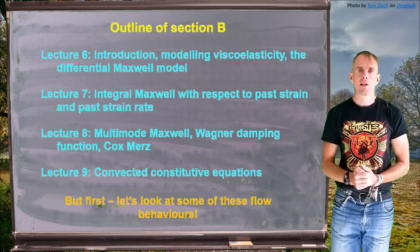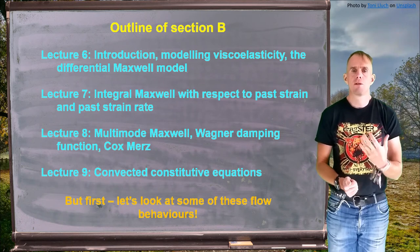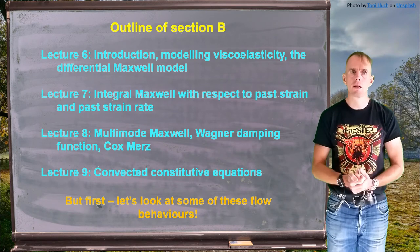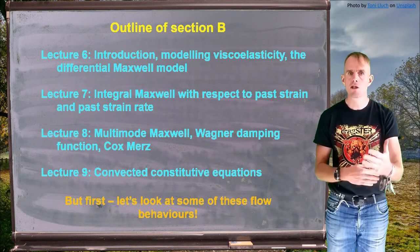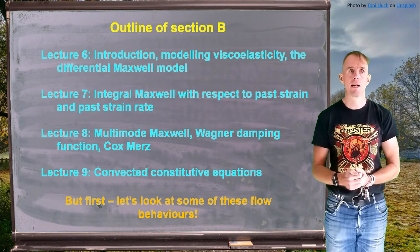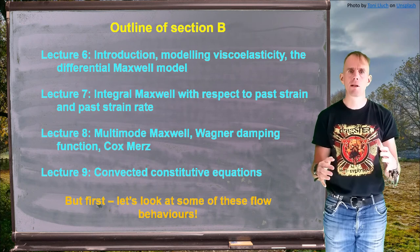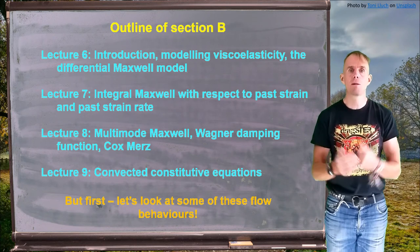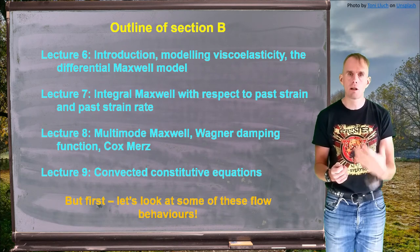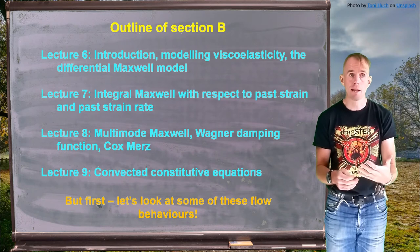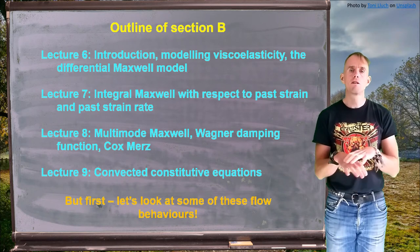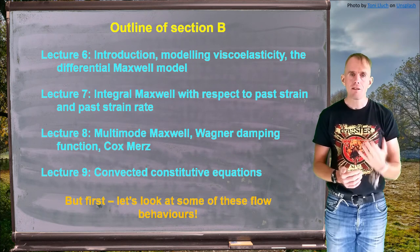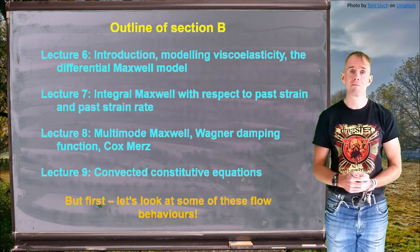So, a quick outline of Section B. Lecture 6 will give you an example of how we model viscoelasticity — we're going to introduce the differential Maxwell model. In Lecture 7, we'll change the differential Maxwell to the integral Maxwell, and motivate why we do that. In Lecture 8, we're going to adapt Maxwell to describe real materials, using many Maxwell models together, and explore different types of physics we can add to describe certain material behaviours. Finally, in Lecture 9, we'll look at how we form general expressions for the flow of viscoelastic materials. Now let's look at some of the interesting and unexpected flow phenomena of viscoelastic liquids.